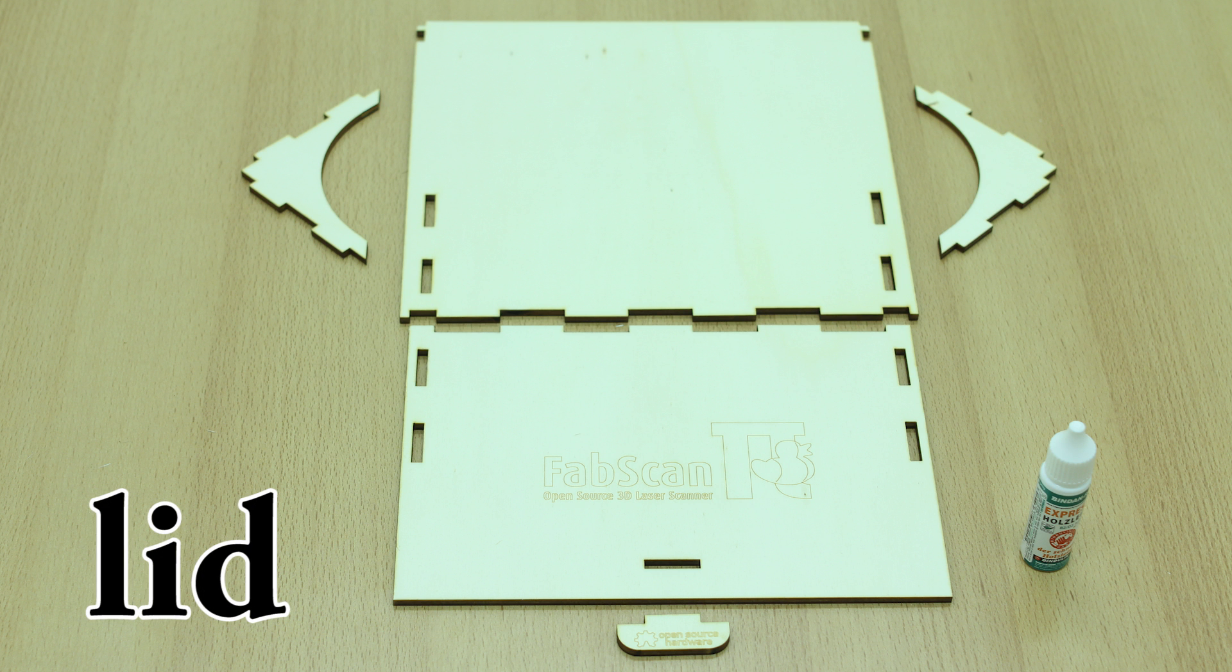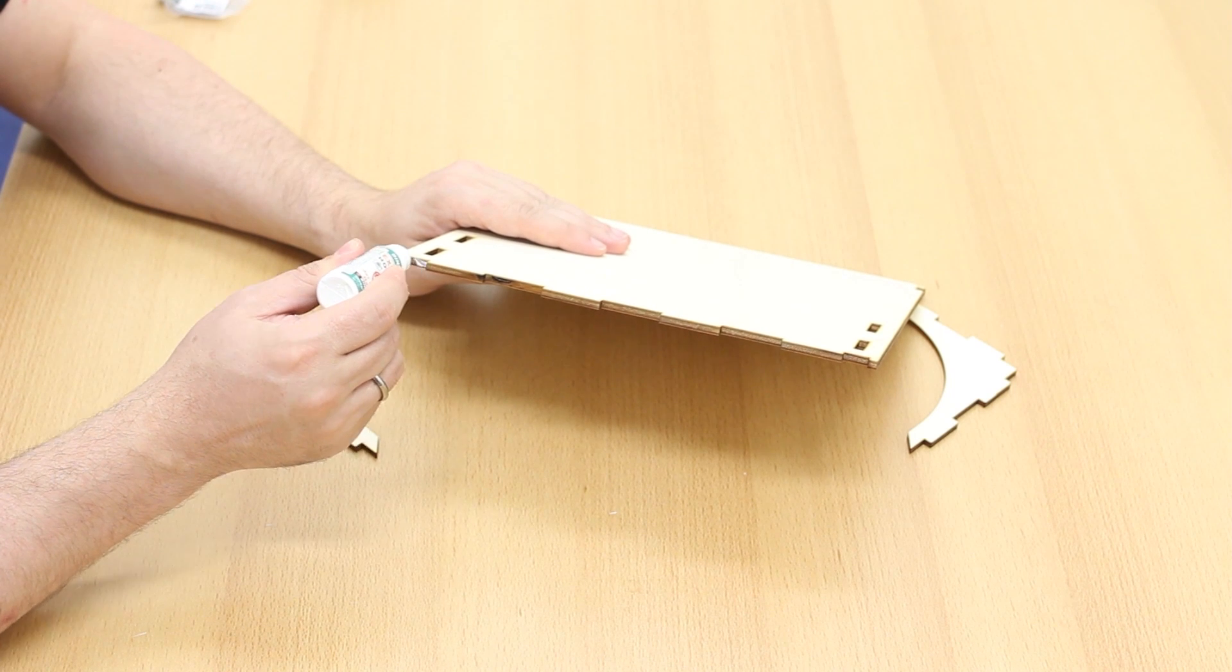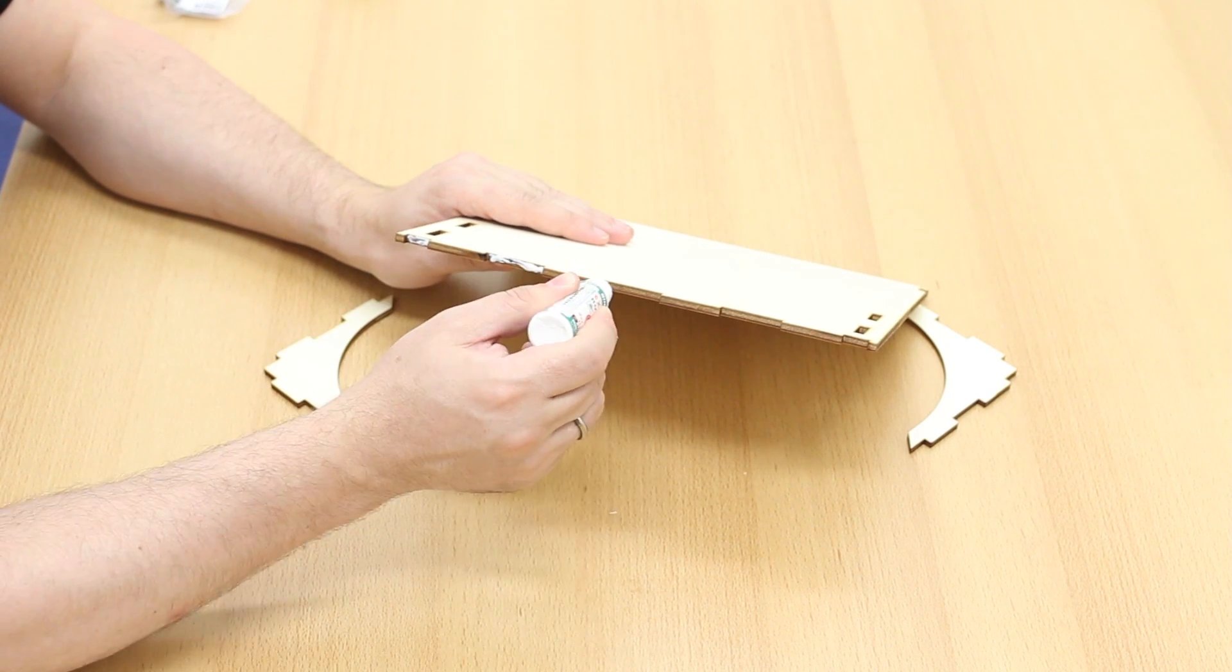Now please take the pieces that you can see in the picture for the lid. Apply some glue to the top of the lid, this is the bigger part.